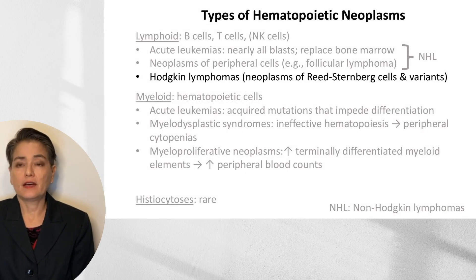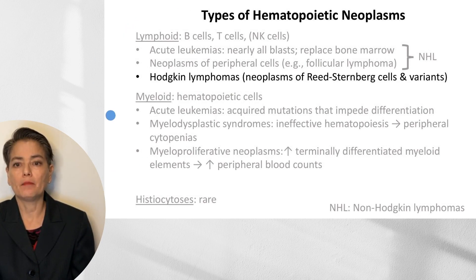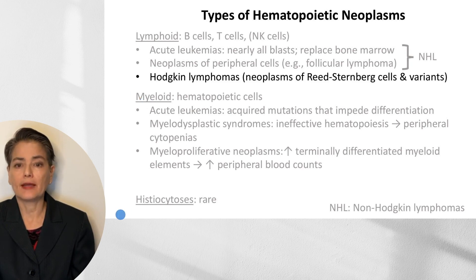This is a slide from that earlier video looking at the types of hematopoietic neoplasms. We can have our lymphoid, our myeloid, and our histiocytic. In this video, we'll be focusing on our Hodgkin lymphomas, which are neoplasms of Reed-Sternberg cells and their variants.